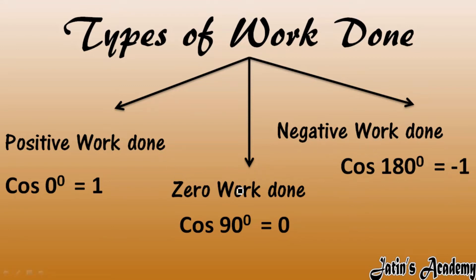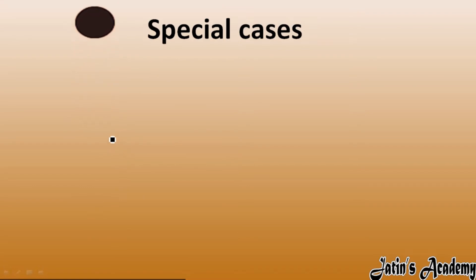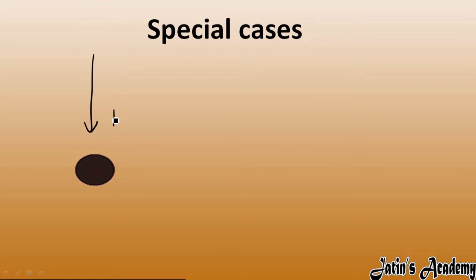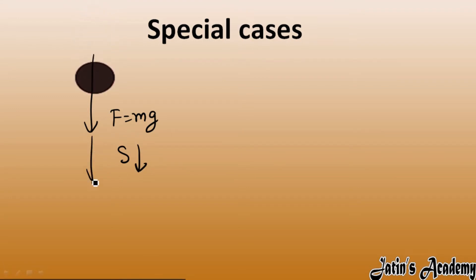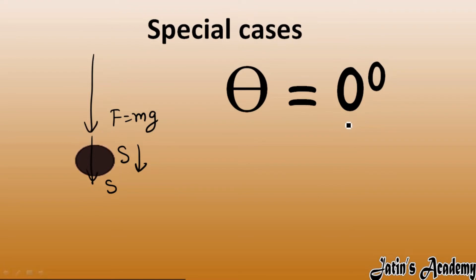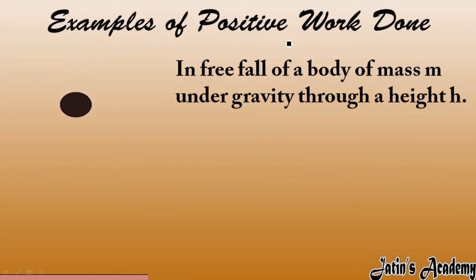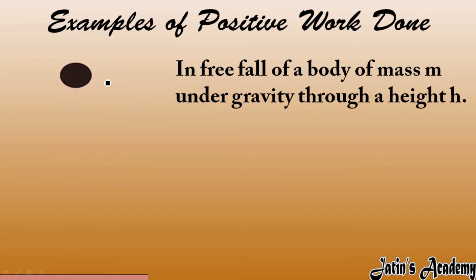So we have positive, zero, and negative work done. Now one by one we will see examples of these special cases. The first special case is free fall of a body, which is an example of positive work done. Here the gravitational force mg acts downward and displacement also occurs in the downward direction. Both force and displacement occur in the same direction, so angle between them is zero degrees — this is positive work done. Example: a free fall of a body of mass m under the effect of gravity through a height h.